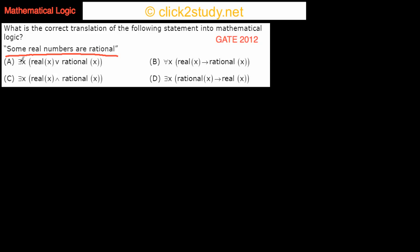Let's go through them one by one. The first option says: there exists X such that X is real or X is rational. This is definitely not correct — it's just saying X is real or X is rational, which doesn't capture the intended meaning at all.